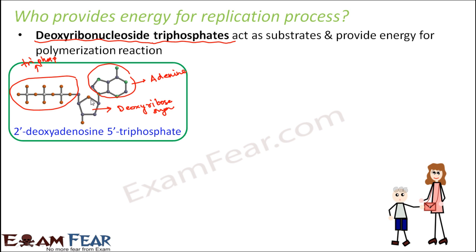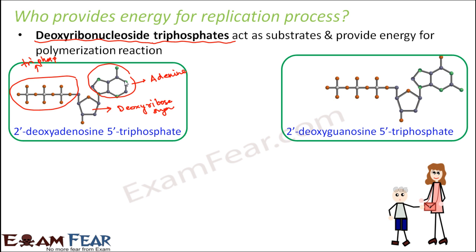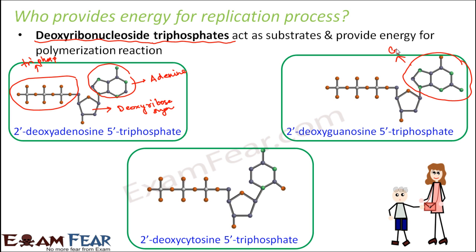There are more examples of deoxyribonucleoside triphosphates depending upon the nitrogenous base attached. It is not necessary that it has to be adenine — it can be guanine as well, in which case it becomes deoxyguanosine triphosphate, where the entire structure is the same but the base is guanine. Or it can be deoxycytosine triphosphate, and similarly thymidine triphosphate as well. These molecules act as high energy molecules storing a lot of energy in their triphosphate bonds, and they provide the energy for the entire DNA replication process.